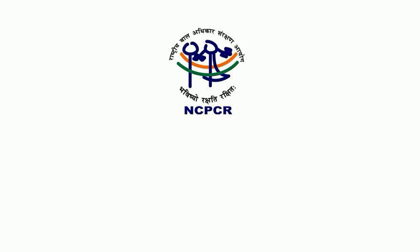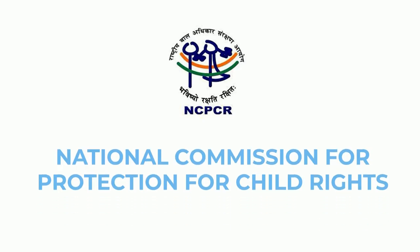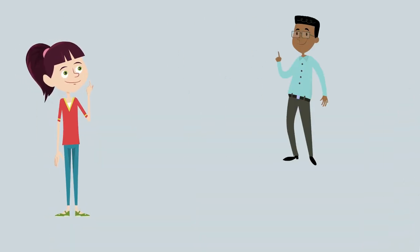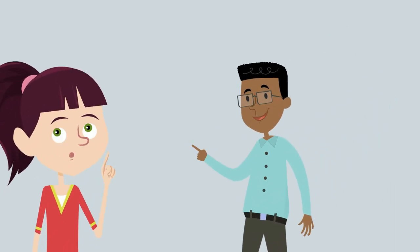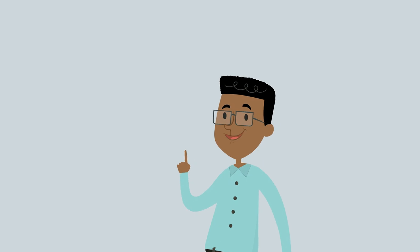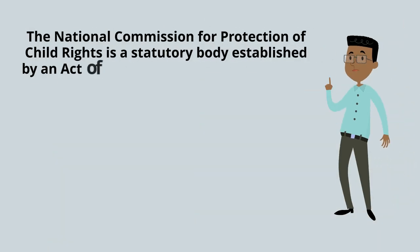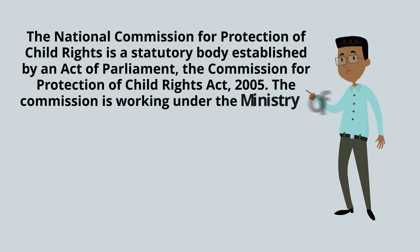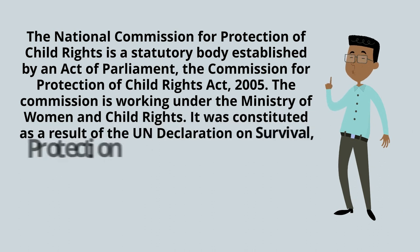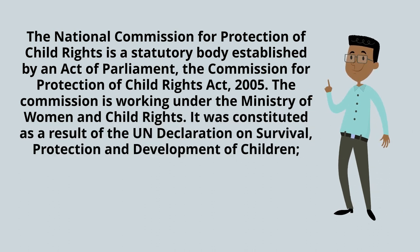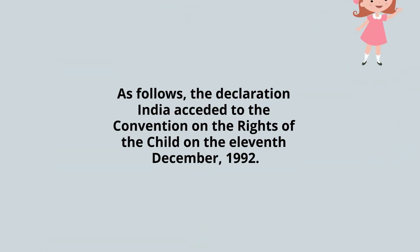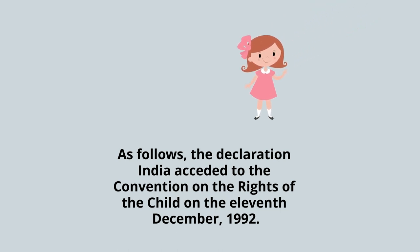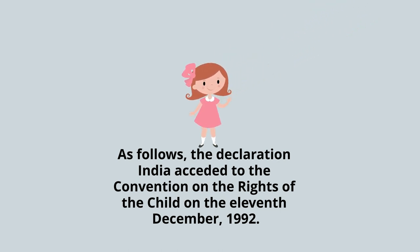Shall we start our discussion from the Commission for Protection of Child Rights? The National Commission for Protection of Child Rights is a statutory body established by an Act of Parliament, the Commission for Protection of Child Rights Act, 2005. The Commission is working under the Ministry of Women and Child Rights. It was constituted as a result of the UN Declaration on Survival, Protection and Development of Children. India acceded to the Convention on the Rights of the Child on the 11th December, 1992.